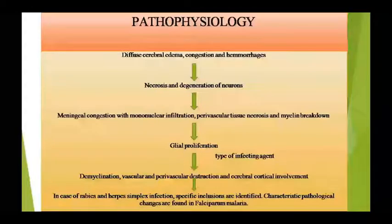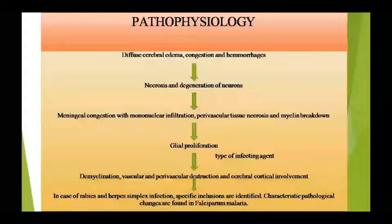Pathological changes की बात करें — parenchymal infiltration में lymphocytes, plasma cells, macrophages वहाँ पहुंच सकती हैं, microglial cells का cluster दिखाई देगा, intranuclear inclusion bodies जैसे Negri bodies present रहेंगी। अगर HIV की वजह से encephalitis हो रहा है तो focal irregular gelatinous area दिखाई देगा जो grey-white matter का बना होता है, और cerebral cortex, brain stem, cerebellum, spinal cord को infect करता है।